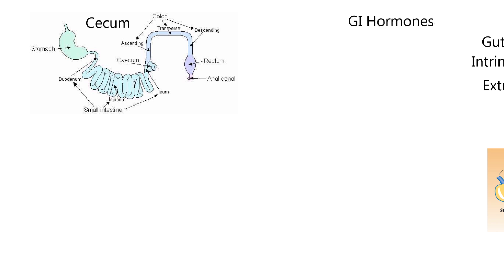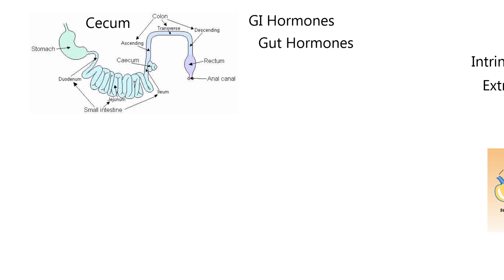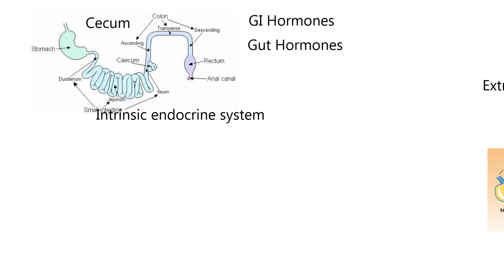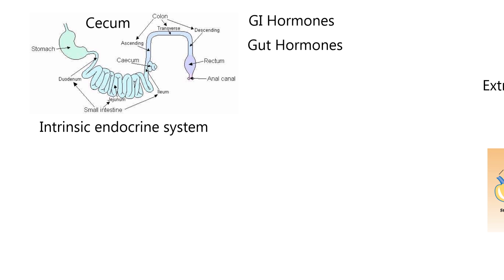We're going to study GI hormones — that's short for gastrointestinal hormones. Sometimes you'll see a chapter on gut hormones. One of the key points here is that the whole digestive tract has what's called an intrinsic endocrine system, with dispersed cells in the stomach and especially the small intestine.